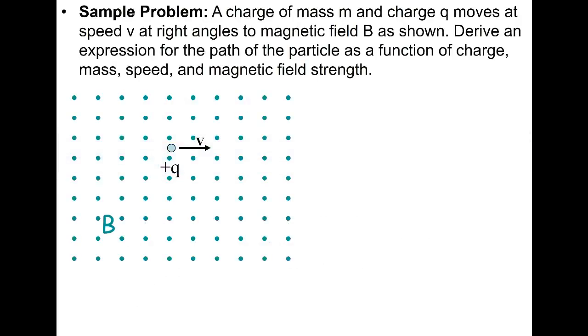So we're going to open this up with an example problem. We have a charge that has mass m and charge q, and it's moving at a speed v at a right angle to the magnetic field B which is coming out of the page. We want to derive an expression for the path of the particle as a function of charge, mass, speed, and magnetic field strength.